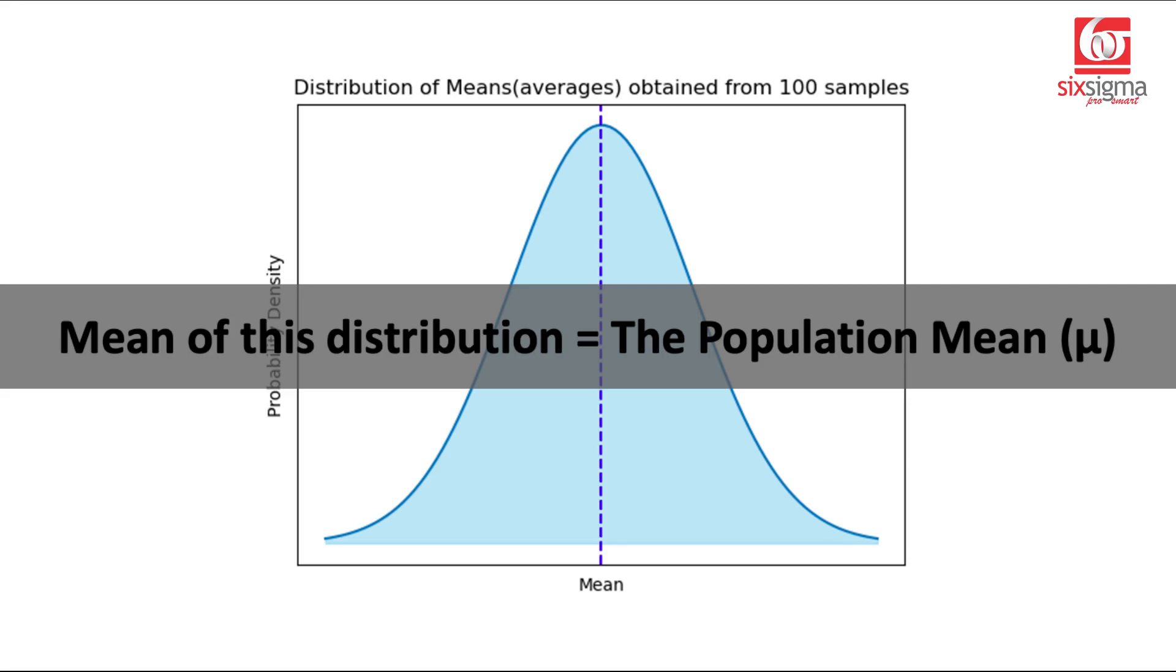So while you could not study those 100,000 observations and do the calculation, by studying these 100 samples alone is giving you an idea about the mean of the population.